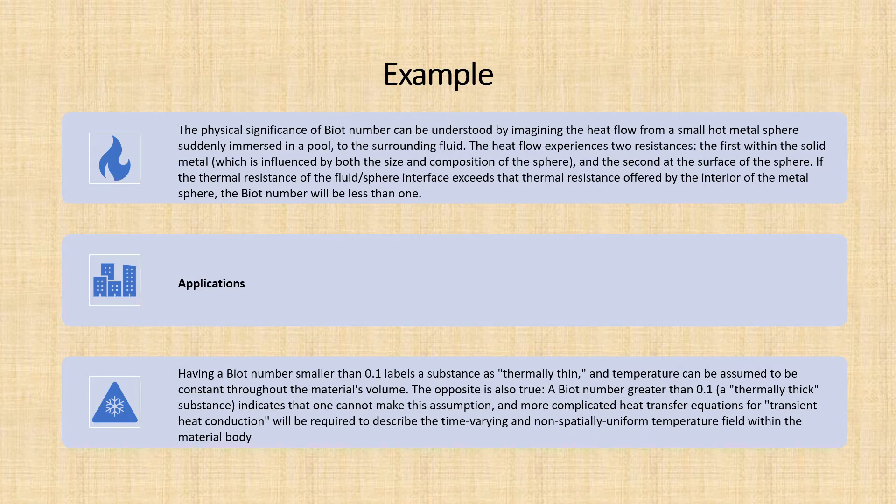and the second at the surface of the sphere. If the thermal resistance of the fluid to the sphere interface is greater than the thermal resistance offered by the interior of the metal surface, the Biot number will be less than one.